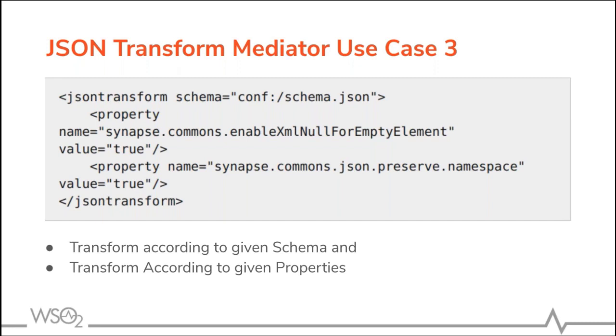In this configuration, we have applied both properties and schema. The properties get applied first and the schema applied afterwards. For example, if we have five keys and need to convert four of them into primitives and one into a string, we can provide the auto primitive property and in the schema we can give the single rule for the key that should remain a string. That's the advantage of giving both the schema and property.